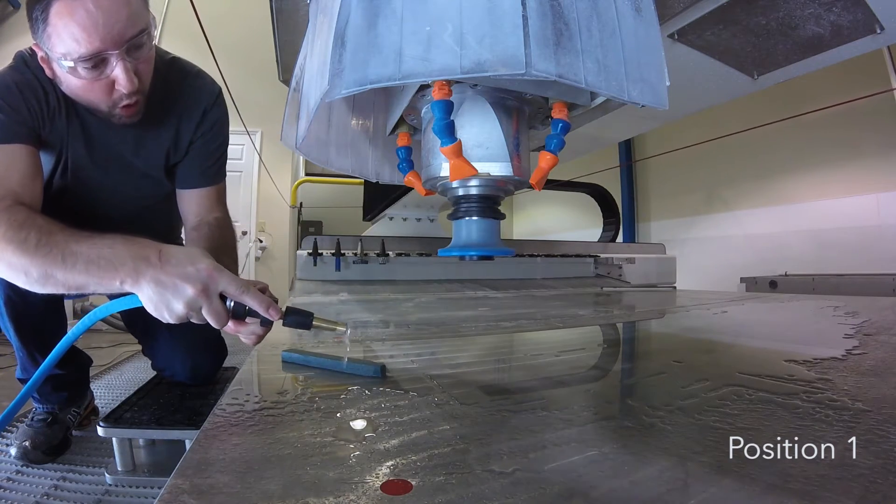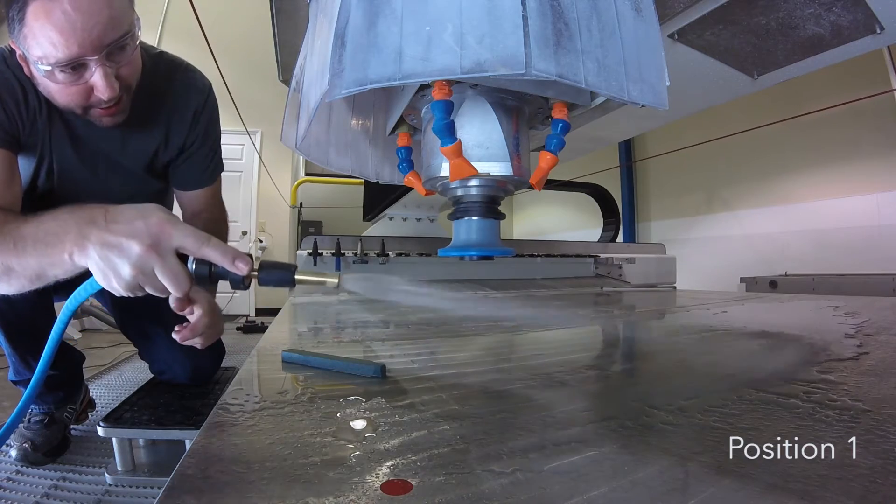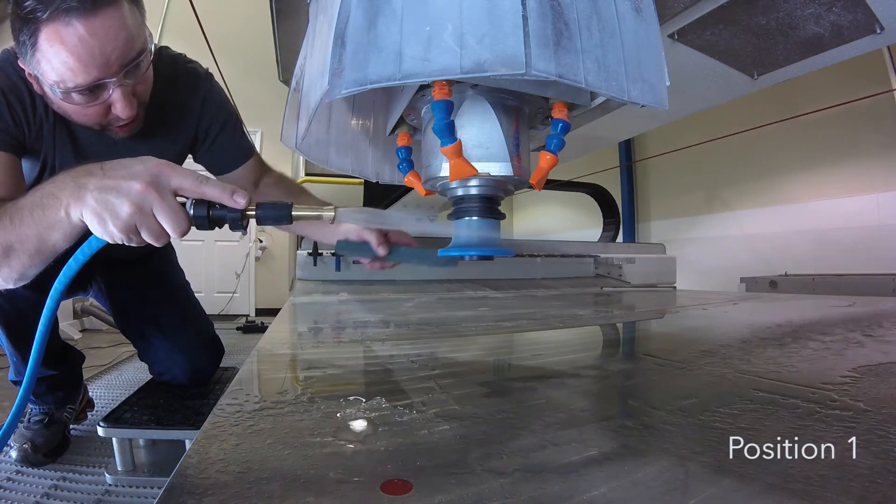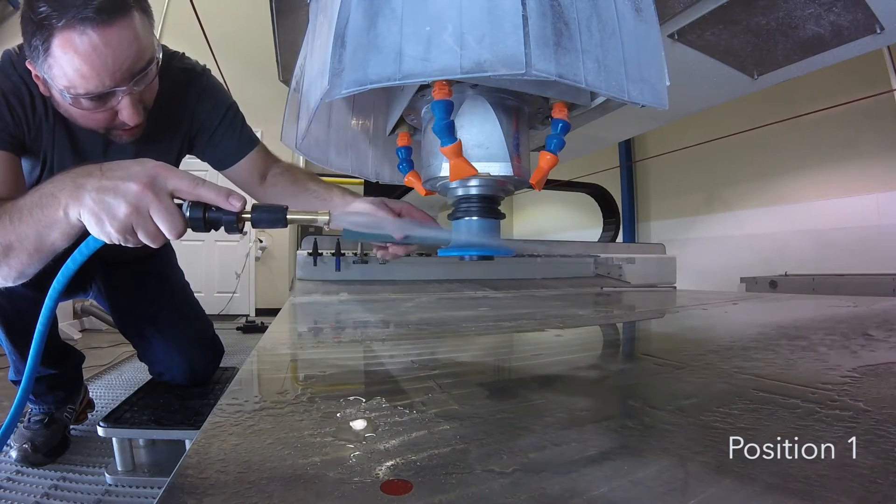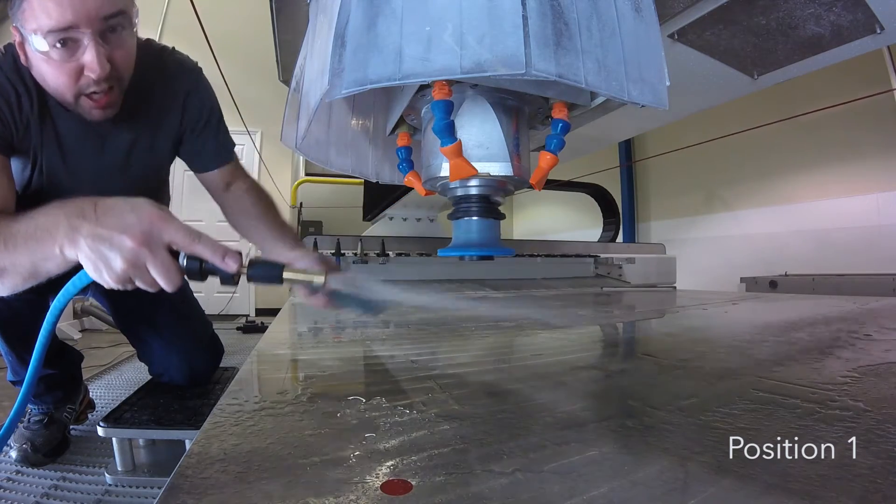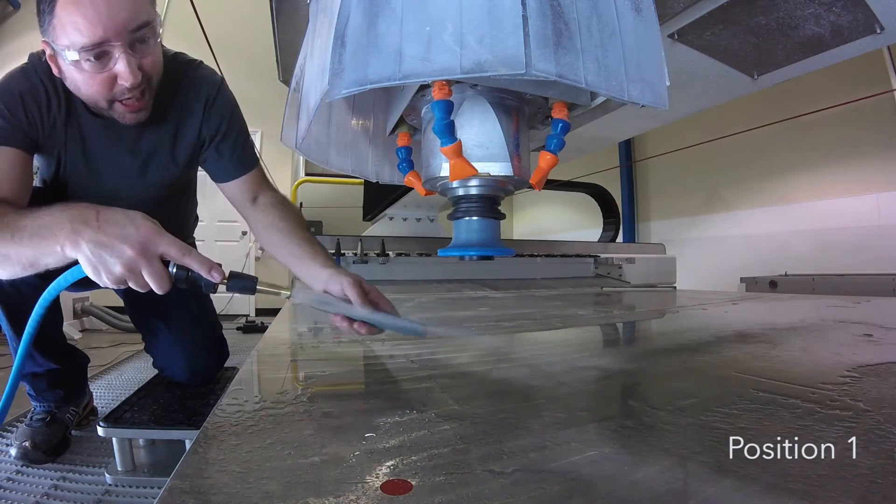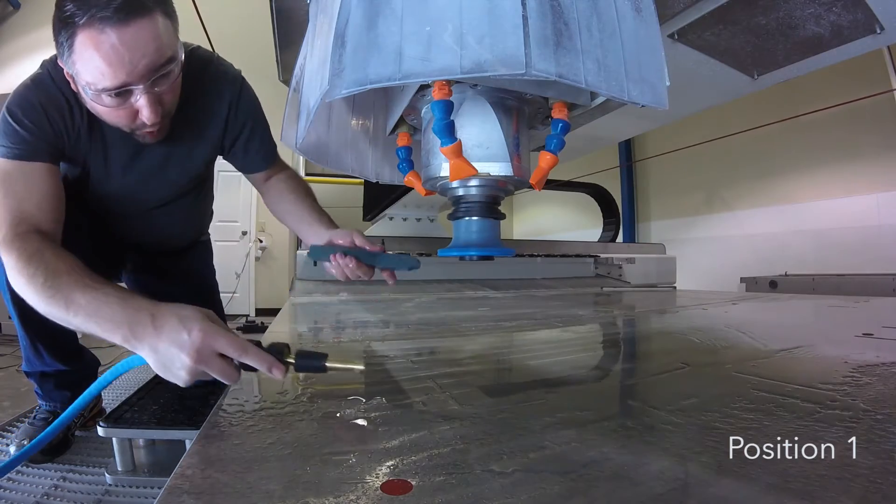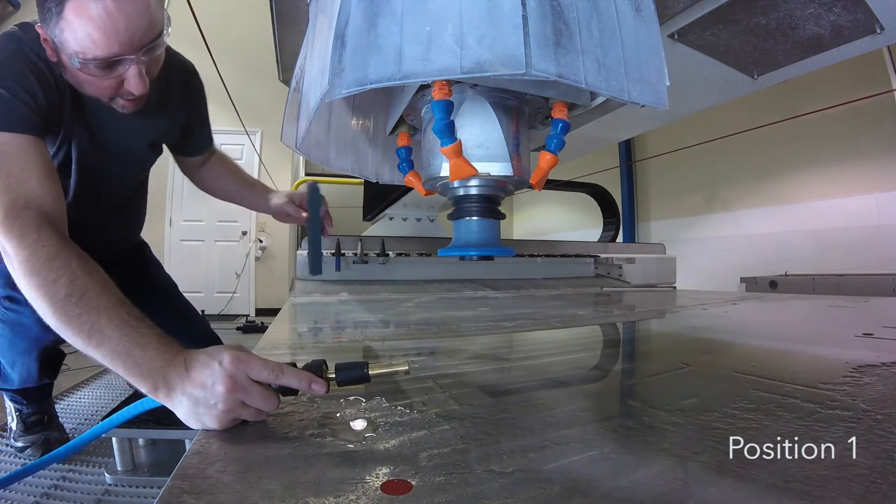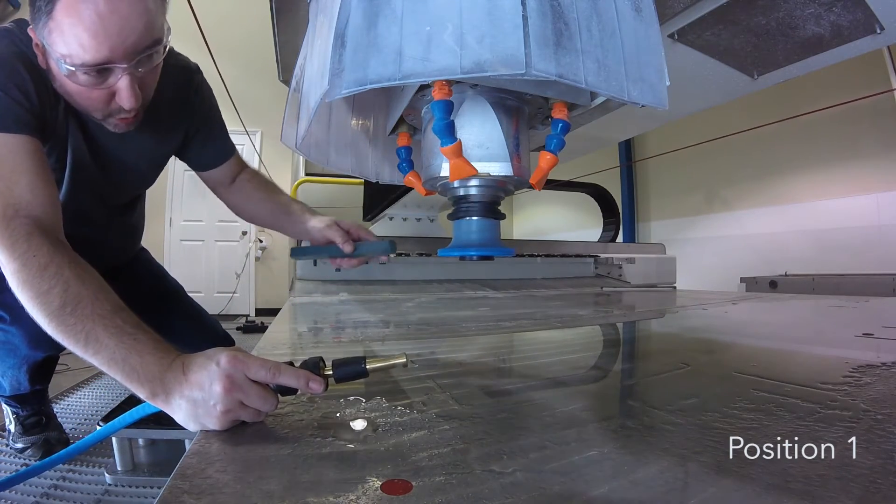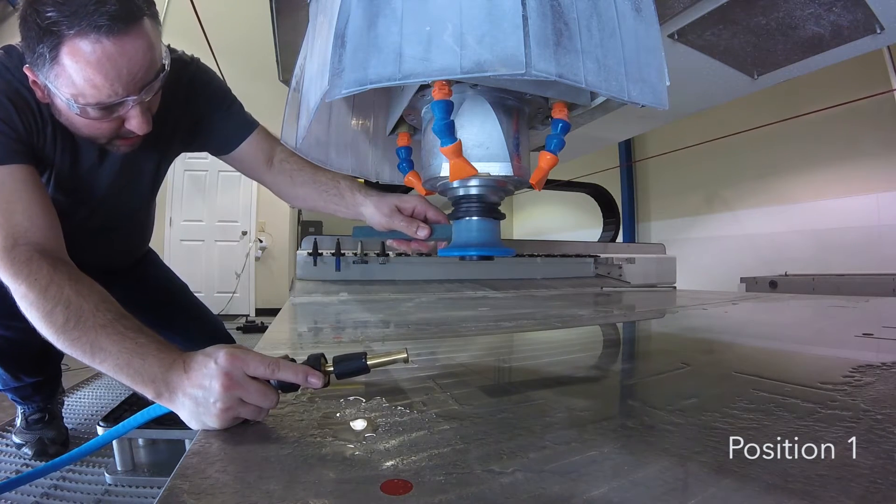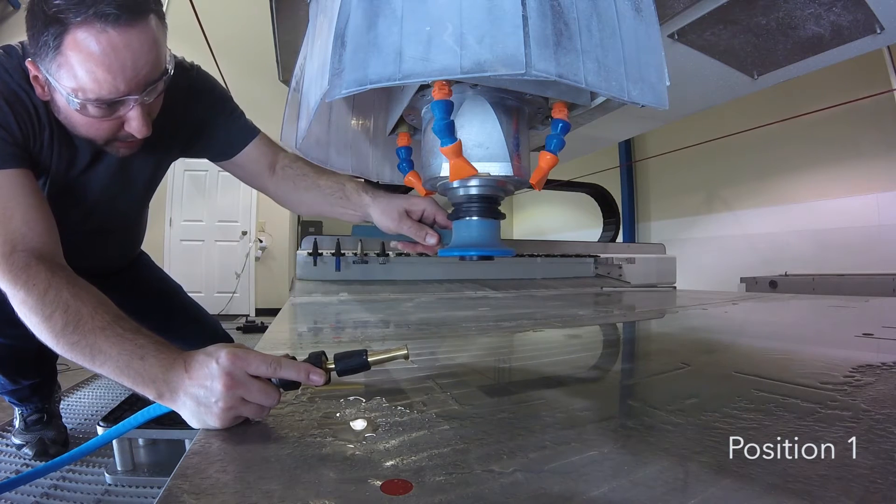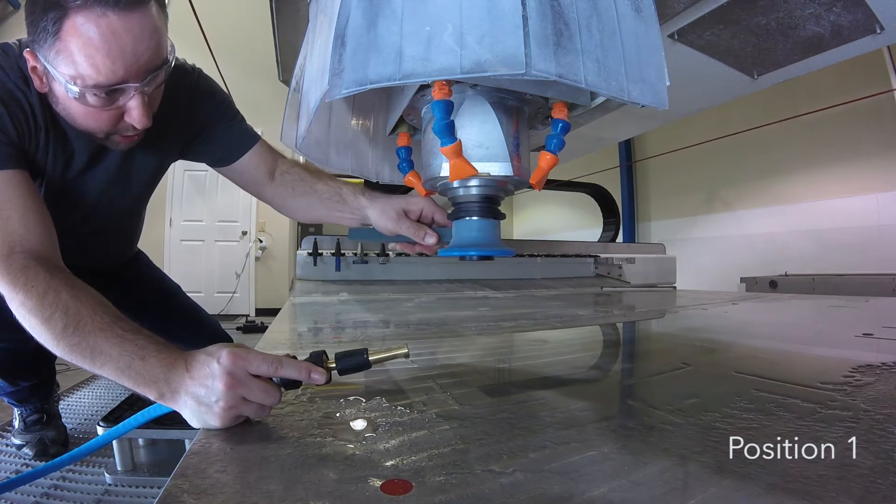Normally when we're dressing we would have a water trail, but to avoid splashing water all over our camera, I'm going to wet the stick instead. You can actually get a bucket of water and just let them sit in the water, and then you can proceed to dress the diamond using pressure up and down, up and down to break that pattern up.